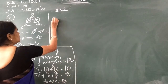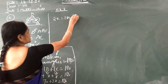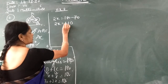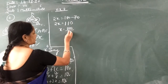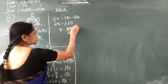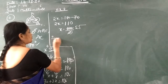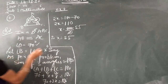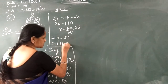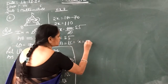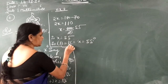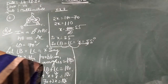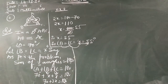So 70 plus 2X equals 180 degrees. Therefore 2X equals 180 minus 70, which is 110. X equals 110 divided by 2, which is 55. So X equals 55 degrees. Angle B and angle C are both equal to X, so angle B equals angle C equals 55 degrees.